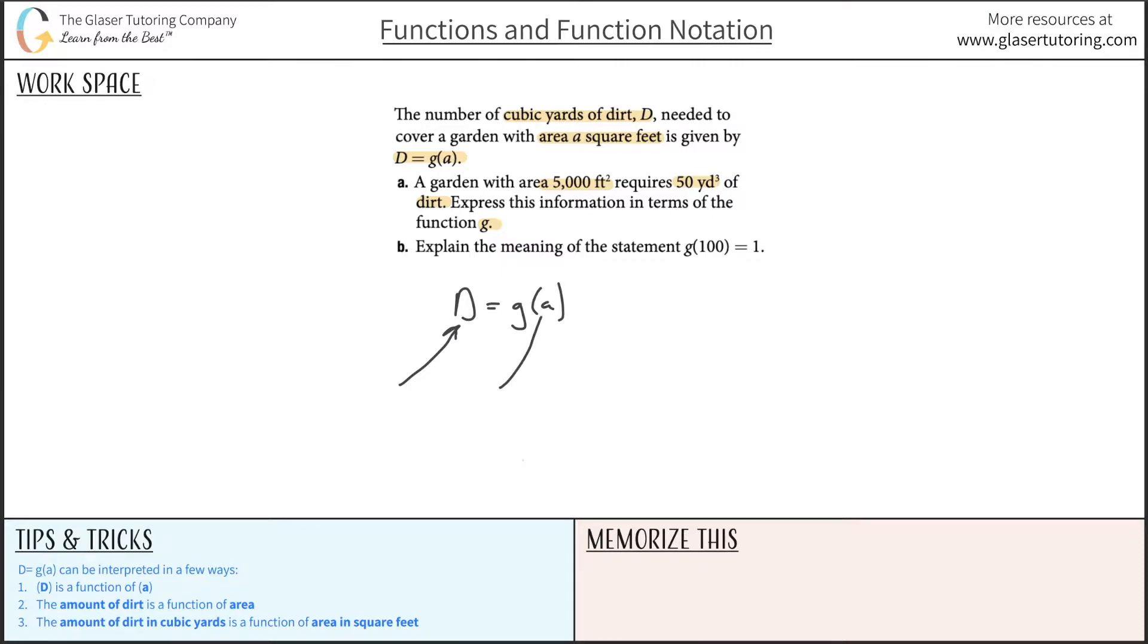Now what does d mean and what does a mean? d represents the amount of dirt and a represents the area. So in a richer context I can say that the amount of dirt is a function of area. Even richer still - because how is the dirt being measured, how is the area being measured? Now I can say that the amount of dirt in cubic yards is a function of the area in square feet. That is the best way to interpret this, the richest context.